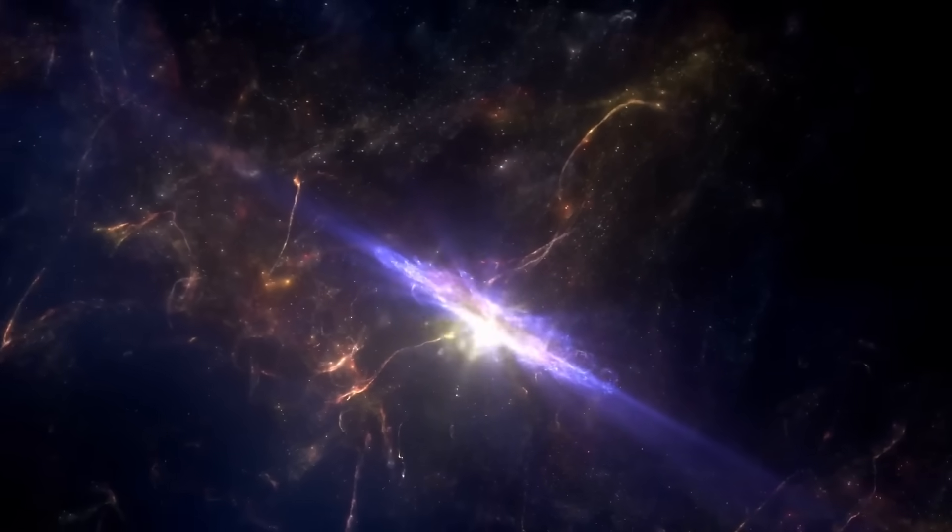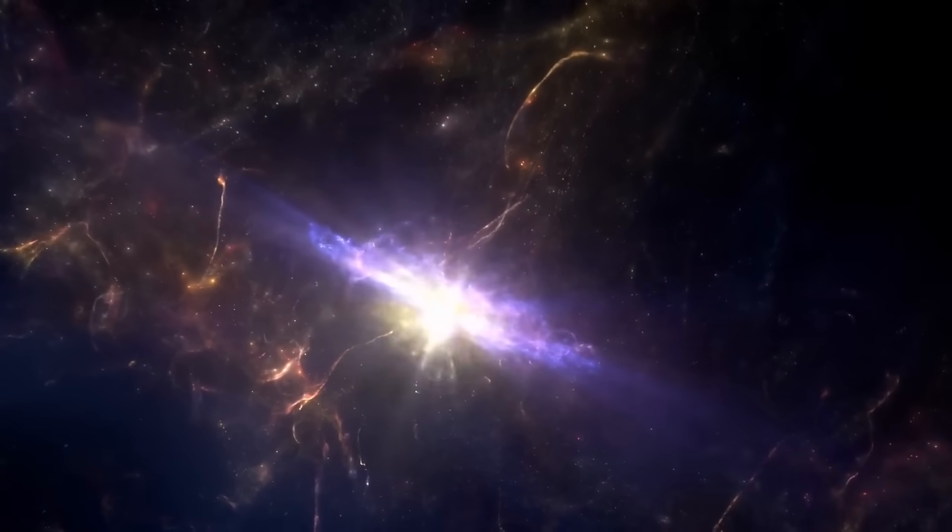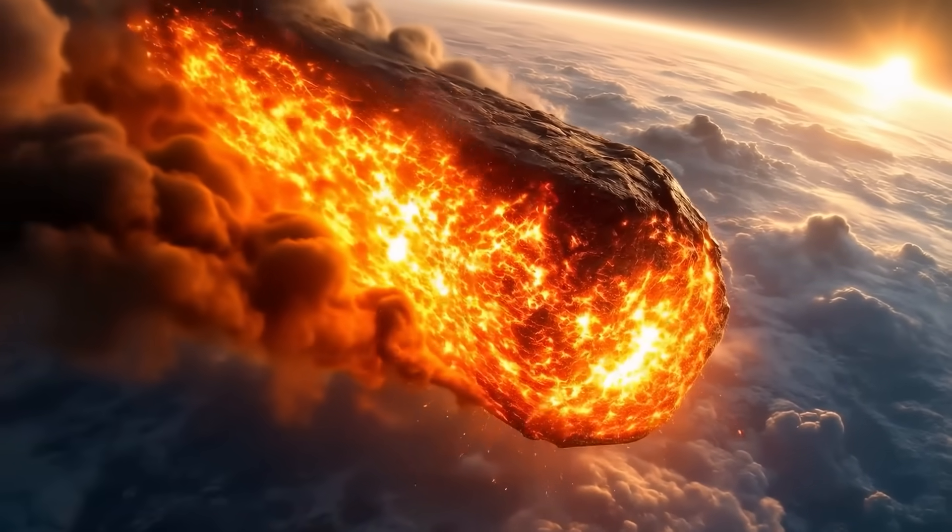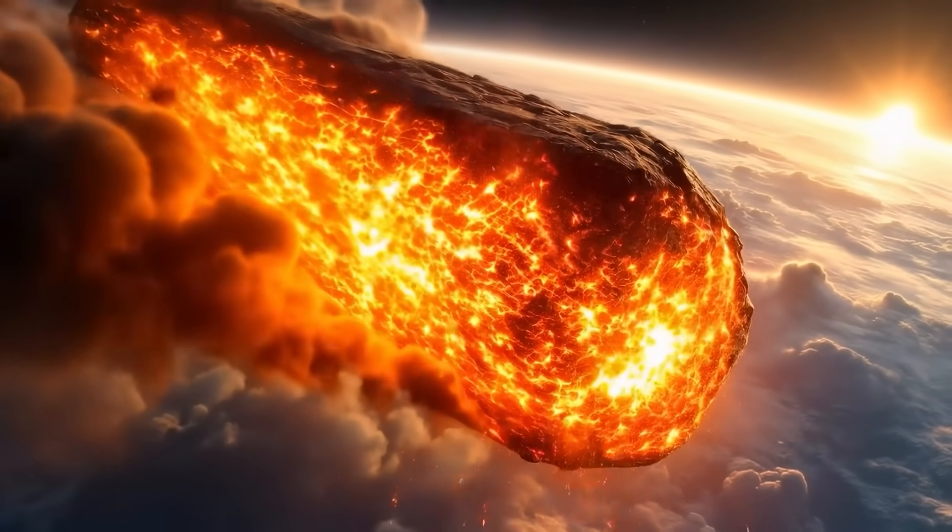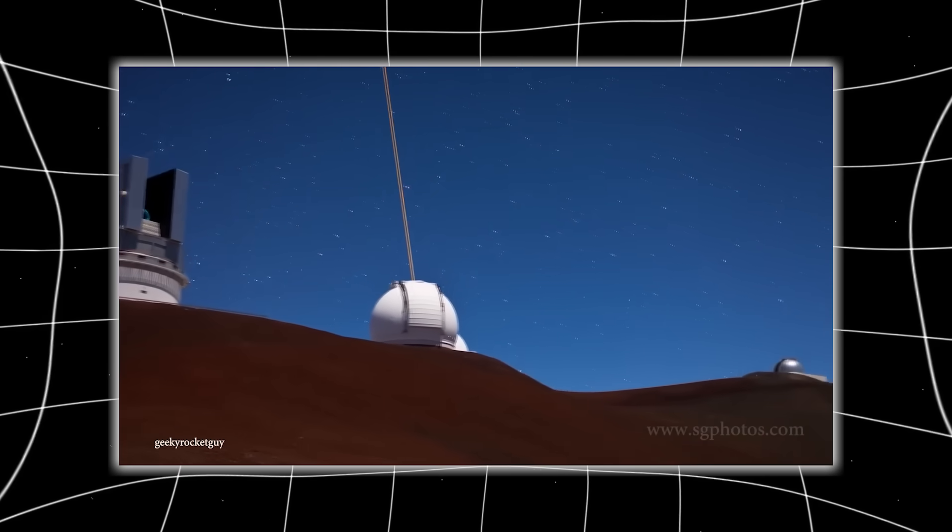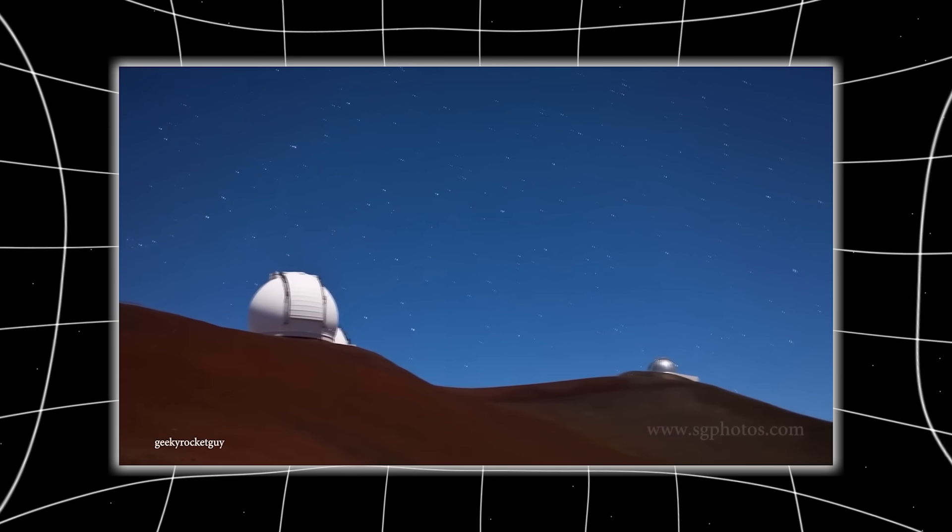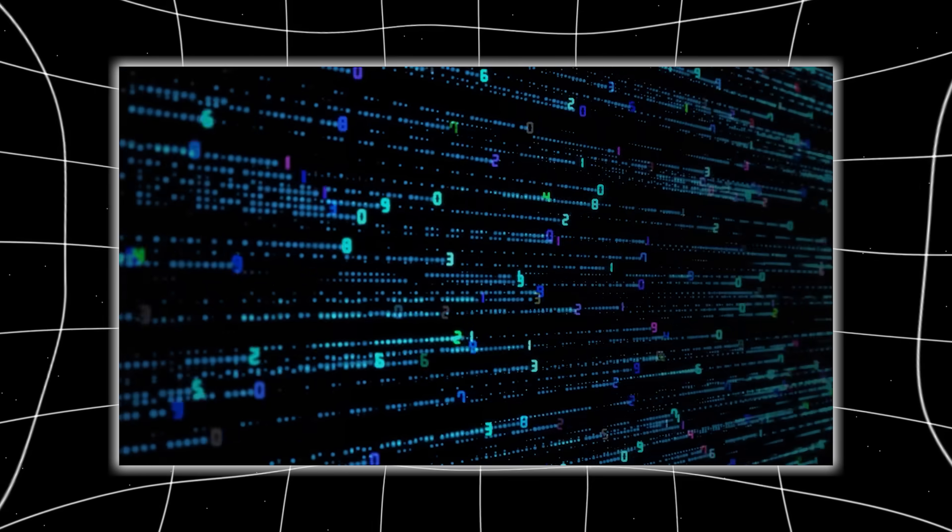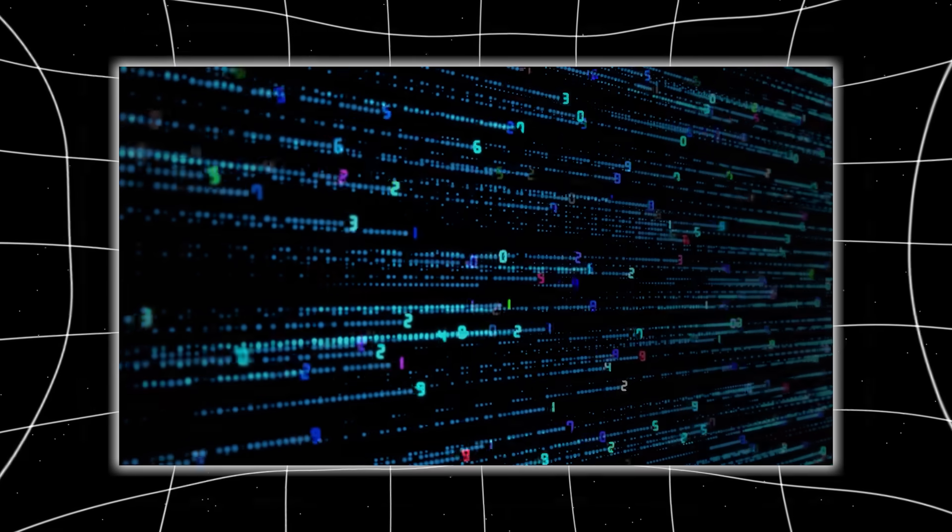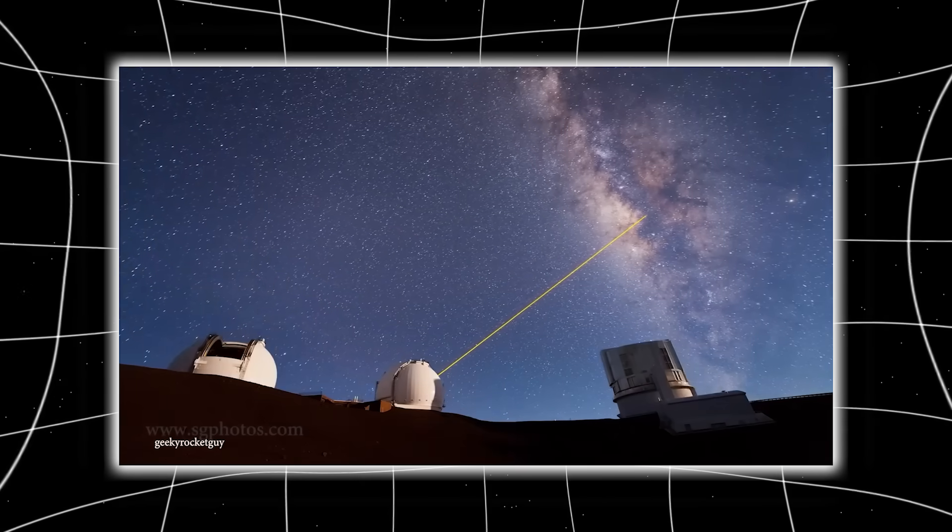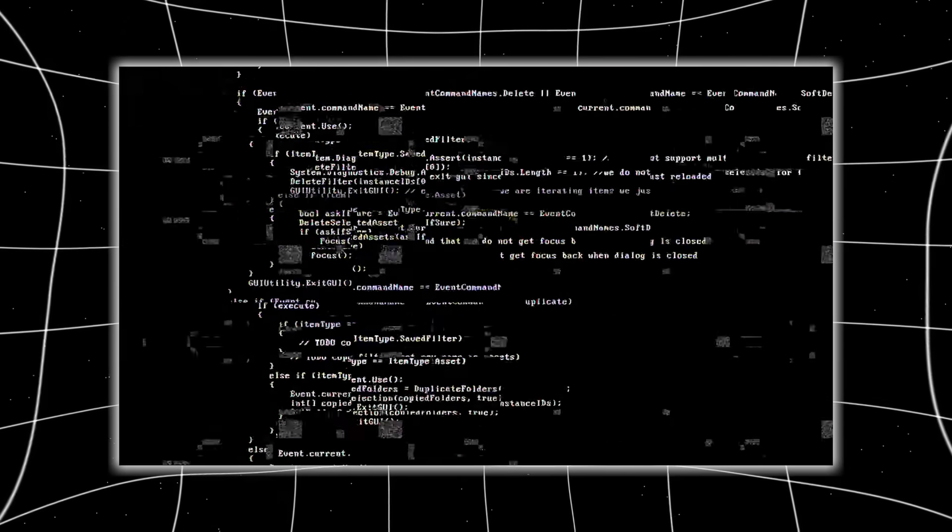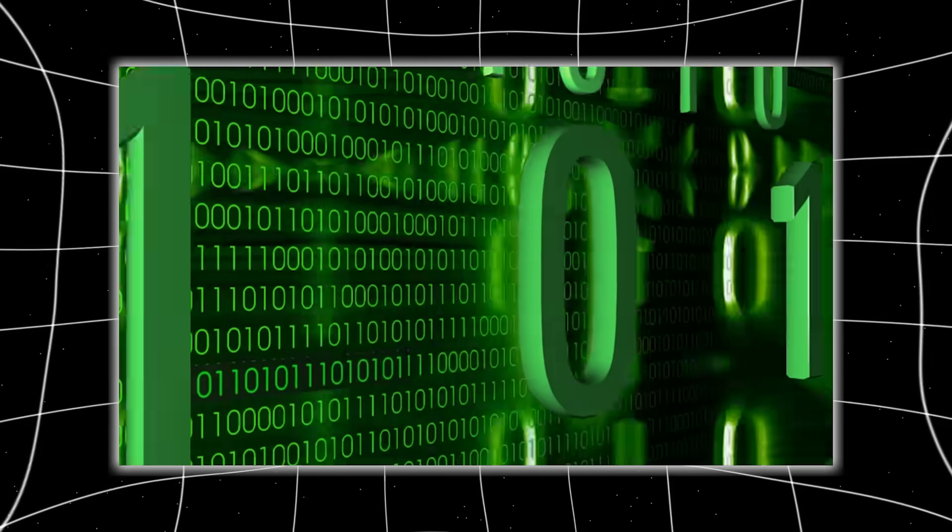It was as if 3I Atlas had learned how to use gravity itself as a bridge, moving through the very fabric of spacetime. Then came the most disturbing discovery of all. The IAWN command center in Vienna received a priority transmission marked Level Omega. It contained a partial data stream reconstructed from the blackout window, the missing 47 minutes when all observatories went silent. When decrypted, the data wasn't telemetry or images. It was binary.